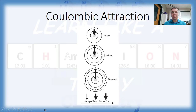When we look at the key here and see that the thicker the arrow, the stronger the force of attraction, we can understand why lithium — the smallest of these atoms — has the greatest force of attraction: the distance between the outermost energy level and the nucleus is the smallest. Smaller distance means greater force of attraction.